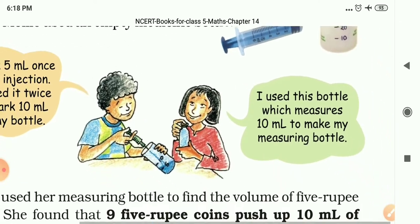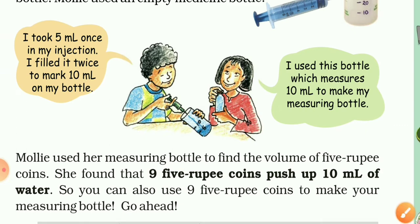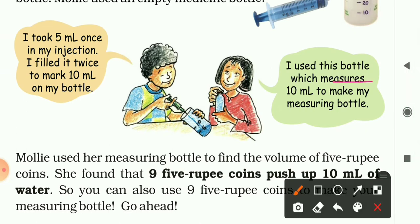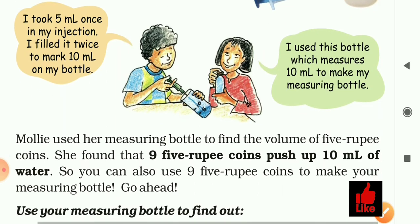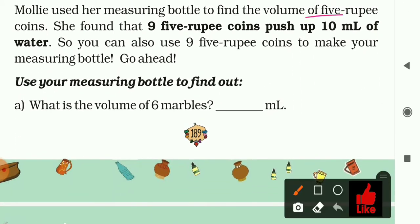Molly used a bottle measuring 10 ml to make her measuring bottle. She used it to find the volume of five-rupee coins and found that nine five-rupee coins pushed up 10 ml of water.